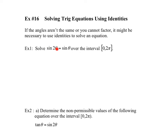Example 1. The angles aren't the same, but we do have an identity that can change this expression, sine 2 theta, into only theta. And that comes from your formula sheet. So sine 2 theta is 2 sine theta cos theta. And that's equal to sine theta.